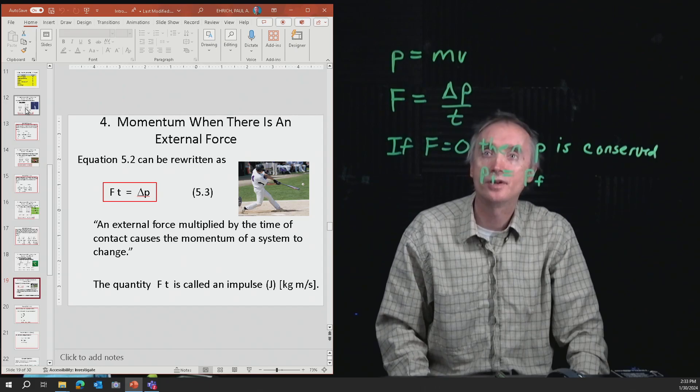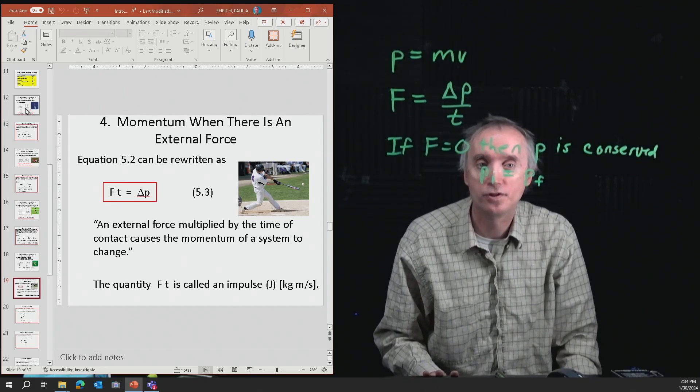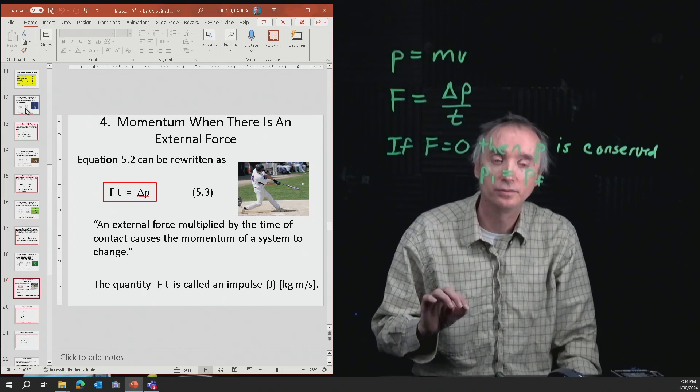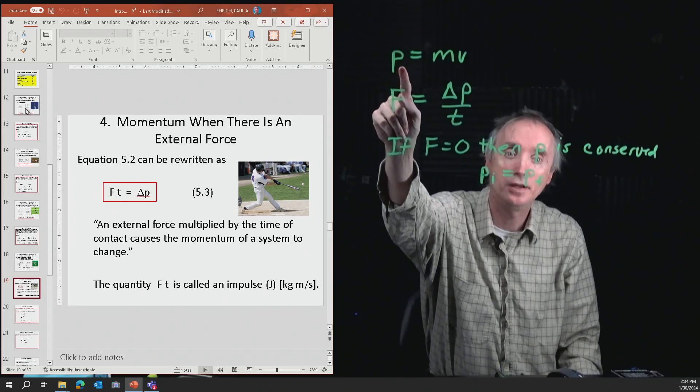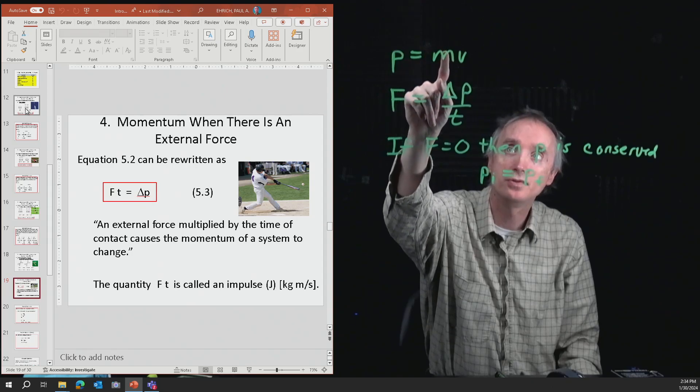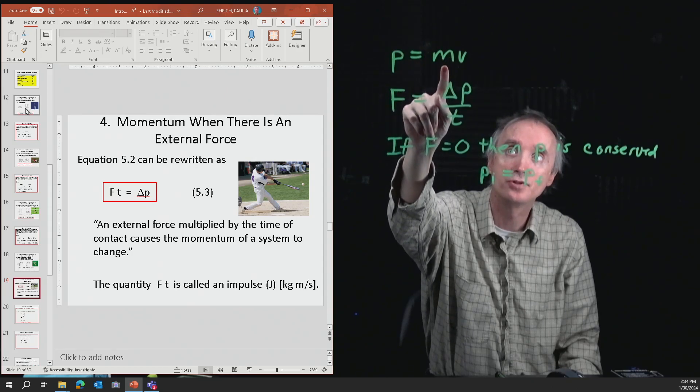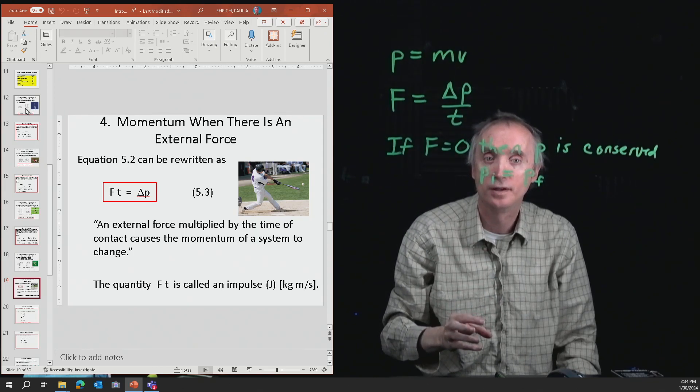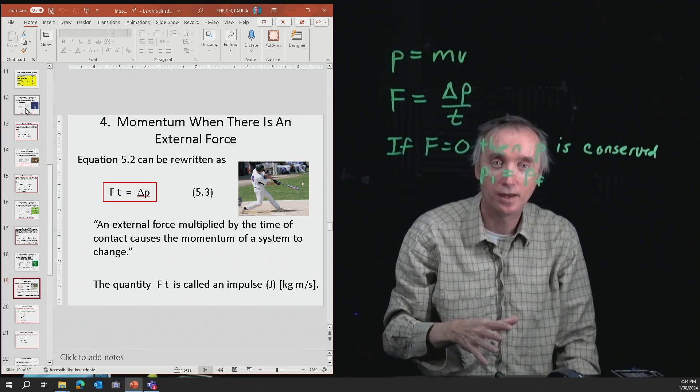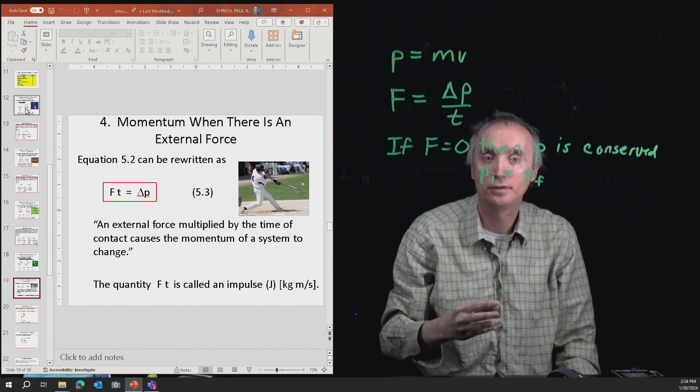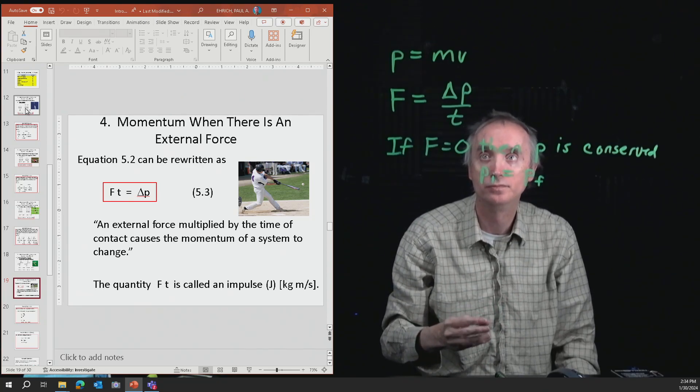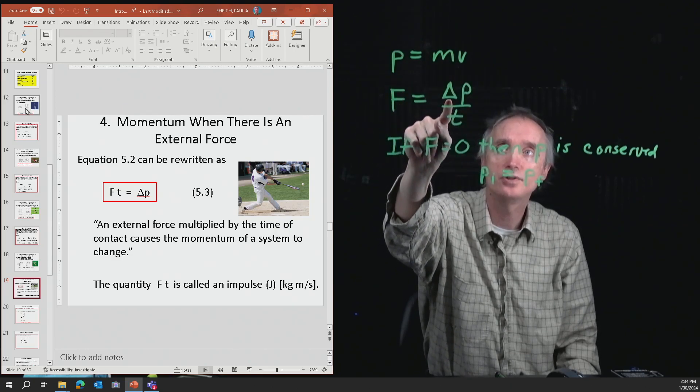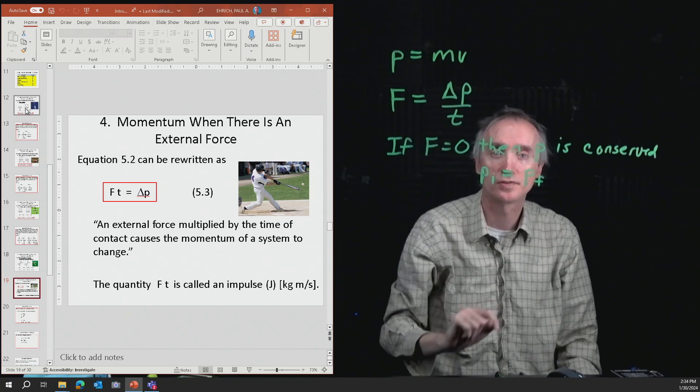Now let's summarize what we've been talking about. Momentum, or linear momentum, is given by the letter P. It's equal to the mass of an object times its speed. Newton's second law, force equals ma, can be rewritten in terms of momentum. A force changes the momentum of a system.